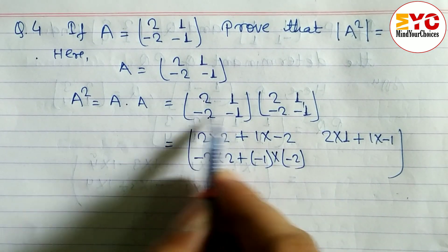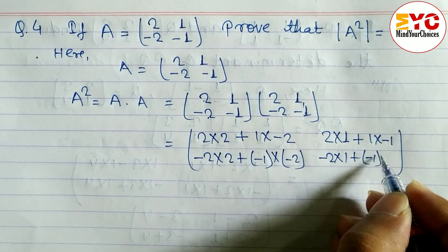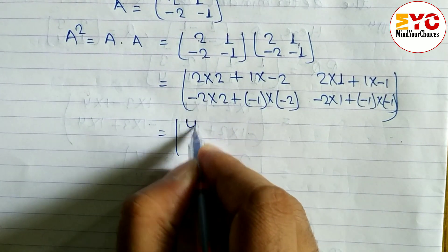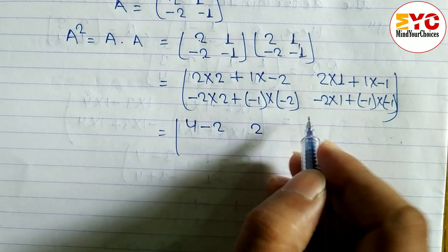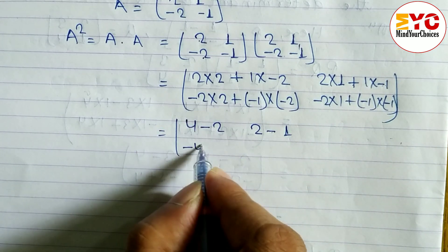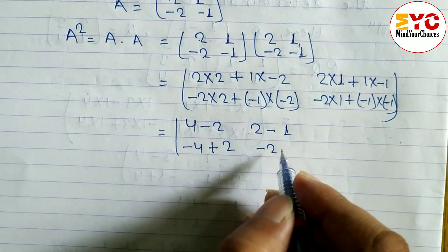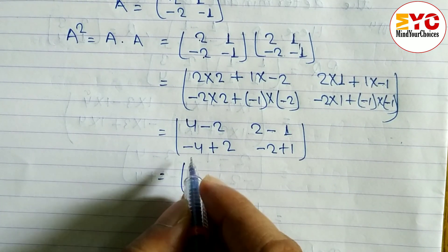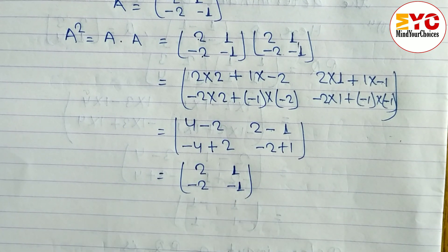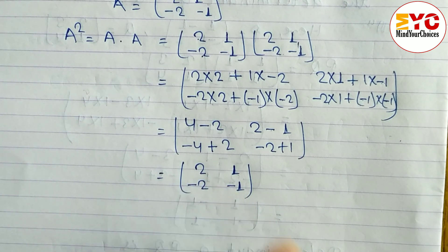Calculating each element: 4 plus minus 2 gives 2; 2 plus minus 1 gives 1; minus 4 plus 2 gives minus 2; minus 2 plus 1 gives minus 1. So A squared equals [[2, 1], [-2, -1]], which is the same as A.